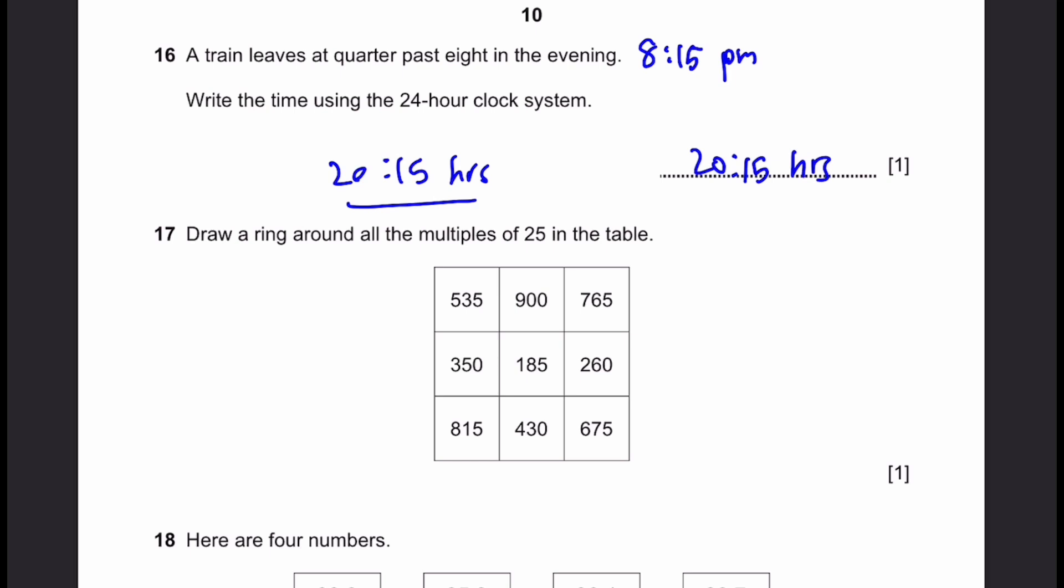Question 17. Draw rings around all the multiples of 25 in the table. So if it's a multiple of 100, it's always a multiple of 25. If it's a multiple of 50, it's a multiple of 25. We know that. So we can circle these two. Just for starters. Now 535 divided by 25 will be 21.4 decimal. 765 similarly gives a decimal. 185 also. 260 also. 815 also. 5 numbers give decimal. Even this one, 430. The last number, 675 which is a multiple of 25. Because when you divide by 25, we get 27.